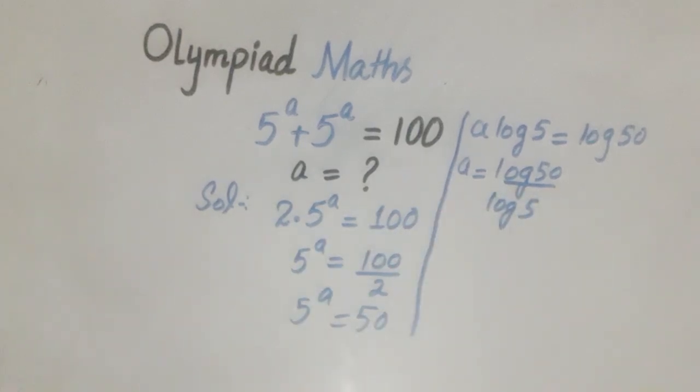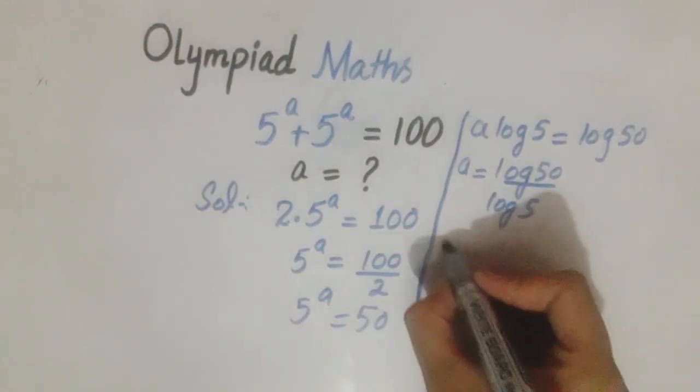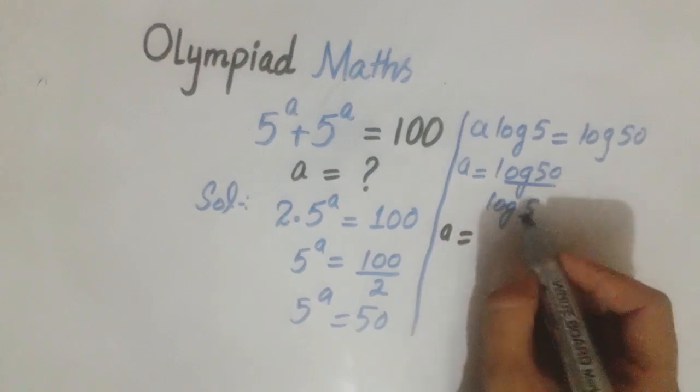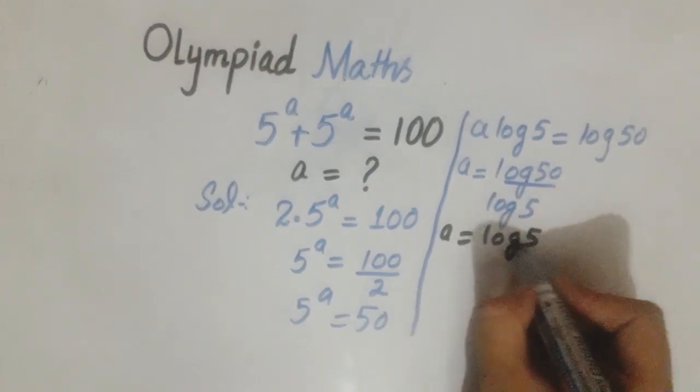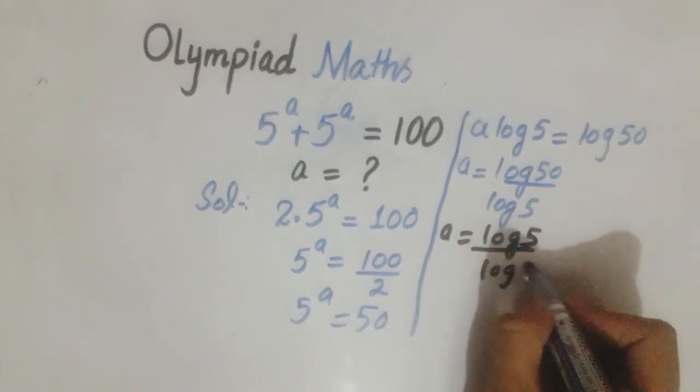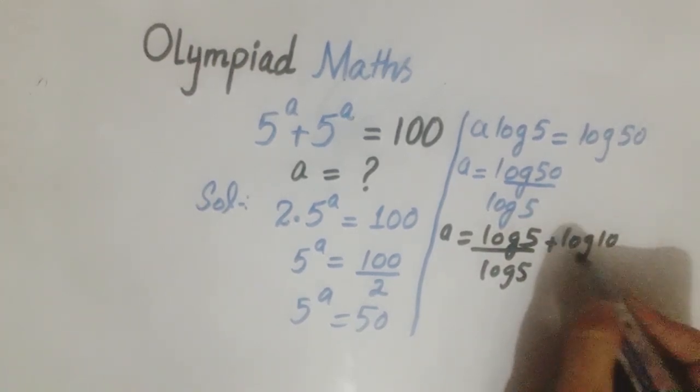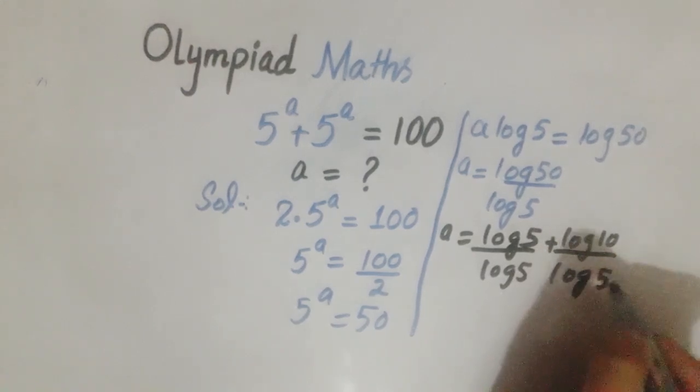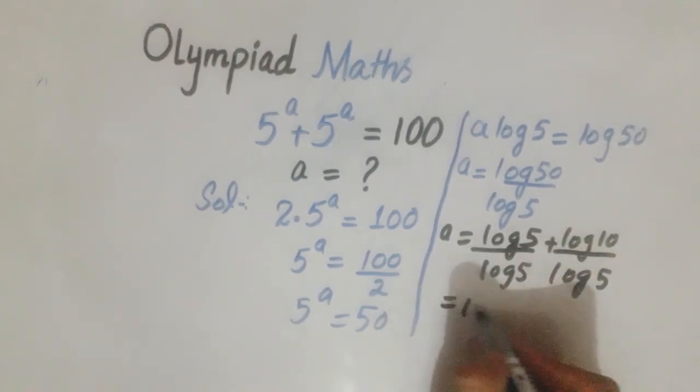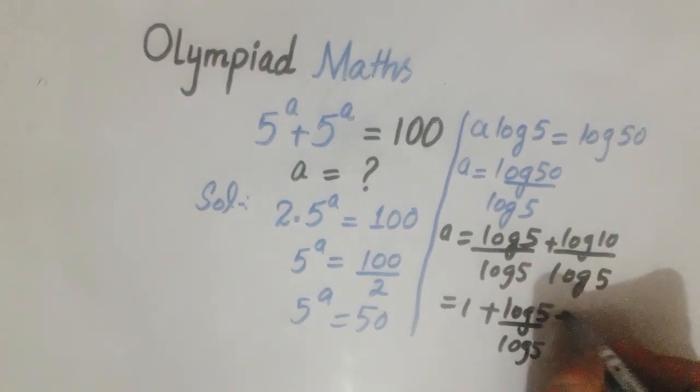Now we can write 50 as 5 multiplied by 10. So log 50 equals log 5 plus log 10. Therefore, a equals log 5 divided by log 5, plus log 10 divided by log 5. The first term equals 1.